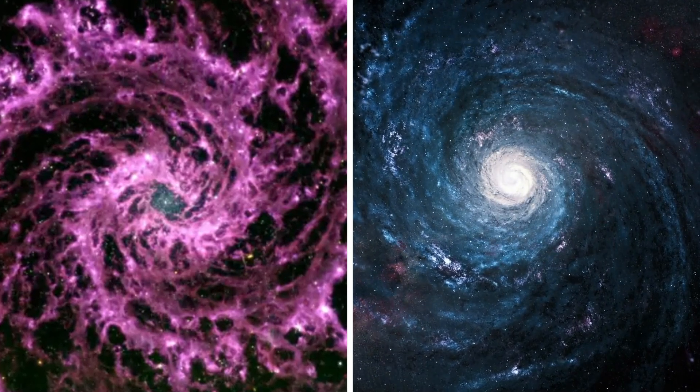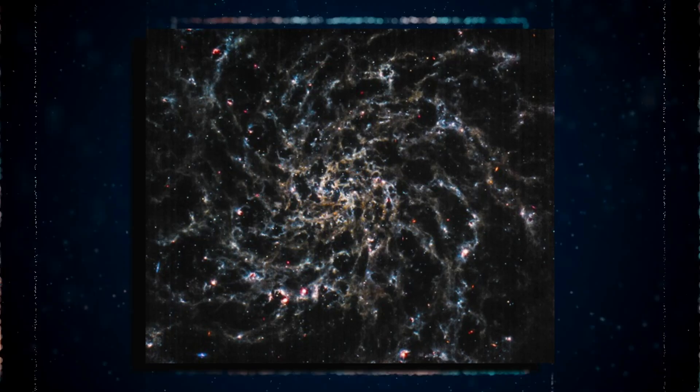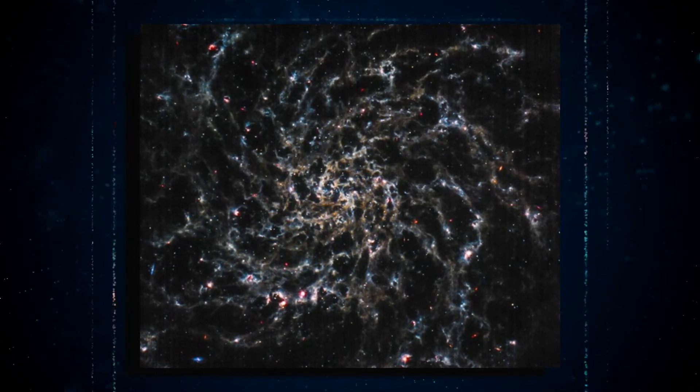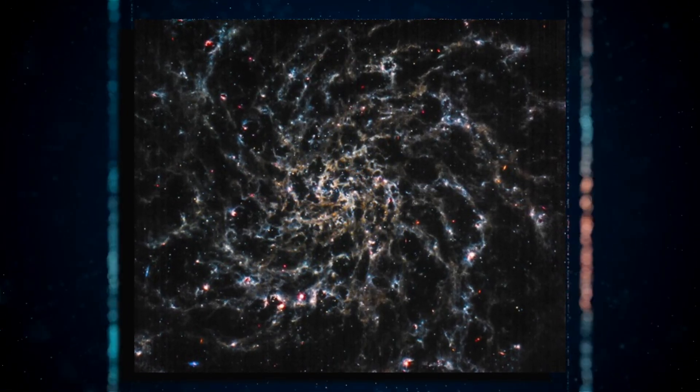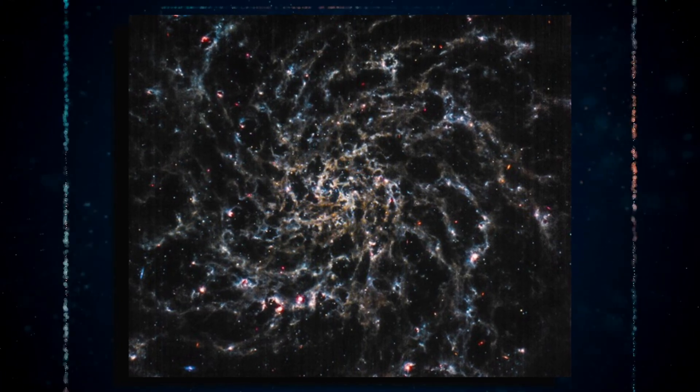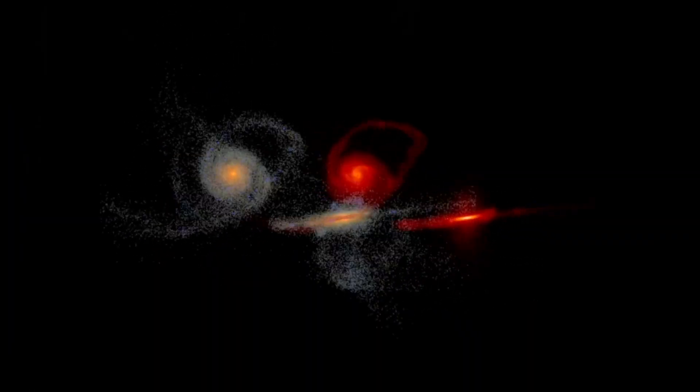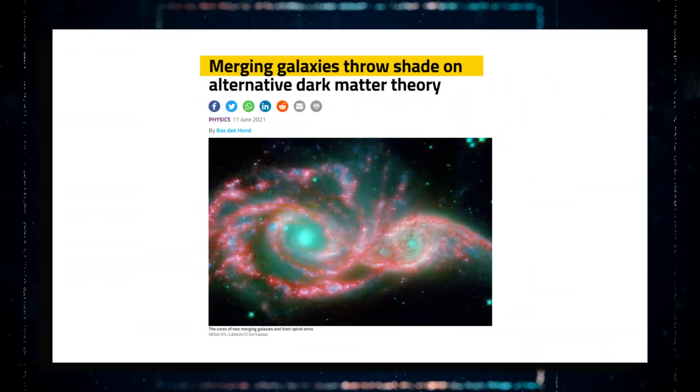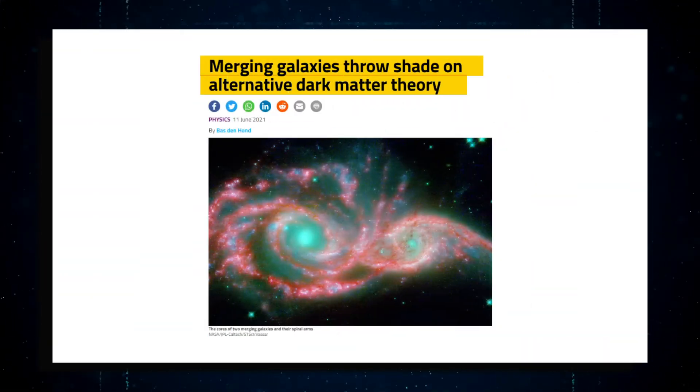Data revealed that there were almost ten times as many smooth spiral galaxies in the images than the theory expected. This casts doubt on the notion that galaxy mergers occur frequently. In other words, this information refutes the merger theory.